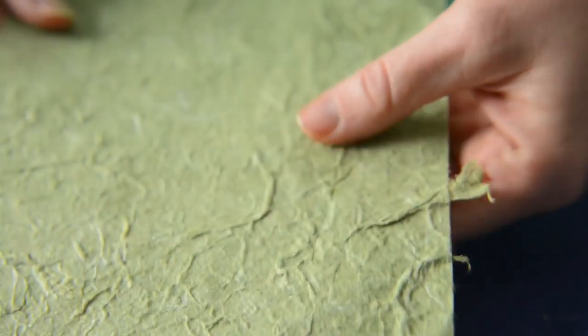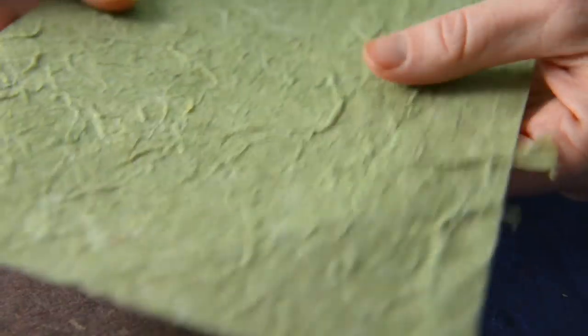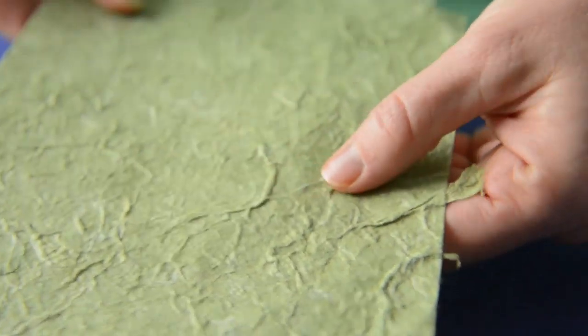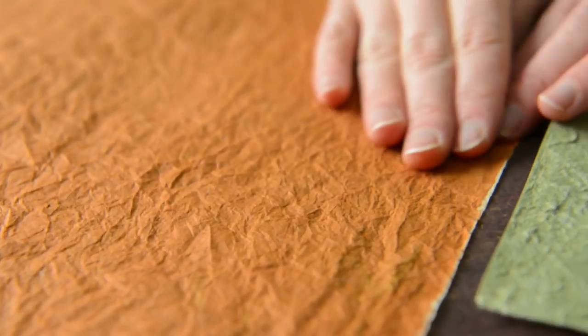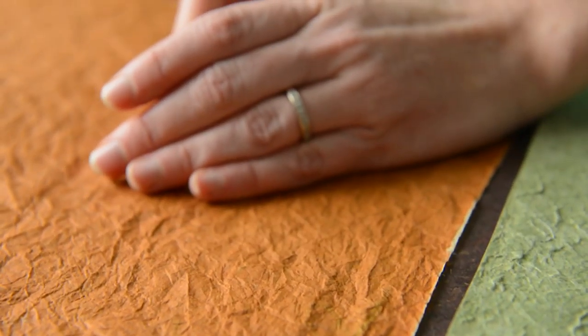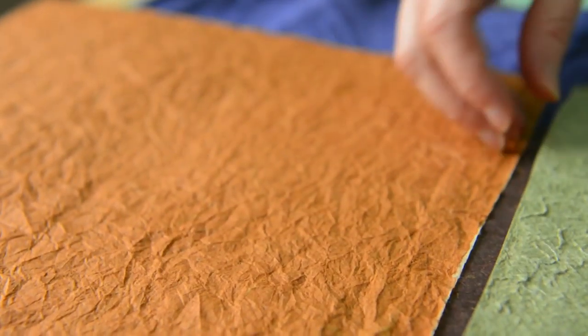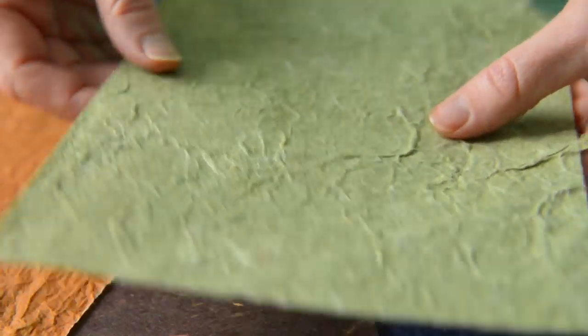This is a traditionally made Unruh and it's thicker and has more variation to it and more texture. This is actually thin. It has a lot of texture to it but it's thin and it's been crumpled in the process of making it to give it more texture. This actually has a lot of pulp and threads in it. You can actually see the threads in there.